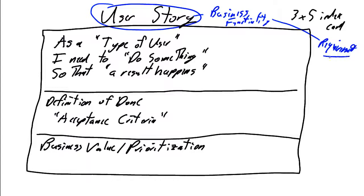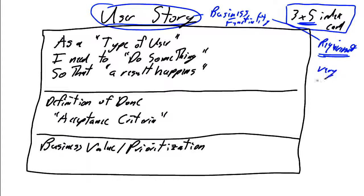The key differentiator in Scrum user stories is that they are very focused, very specific pieces of requirement, as evidenced by the fact that Scrum recommends each user story is written on a blank three-and-a-half by five index card. The concept is we can't put a lot of detail on an index card, so therefore these requirements are very specific.